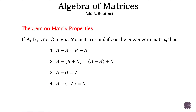Now let's take a look at the theorem on matrix properties. If all the matrices involved have the same dimensions, then all the following is true. Number one is like the commutative property of addition, where the order doesn't matter. Number two is like the associative property of addition, where the grouping doesn't matter. Number three is like the additive identity, where adding a zero matrix doesn't change the original matrix. Number four is like the additive inverse, where the result is a zero matrix.